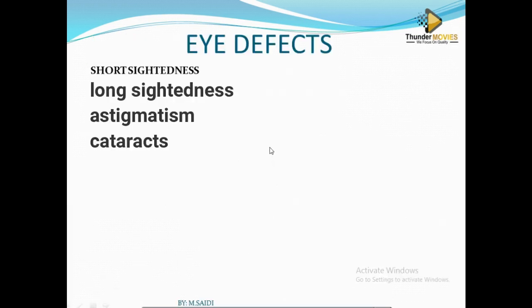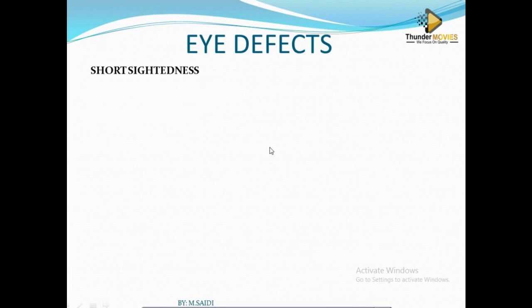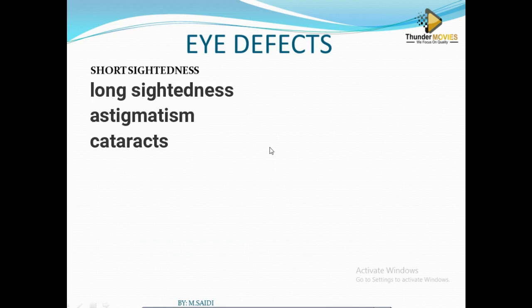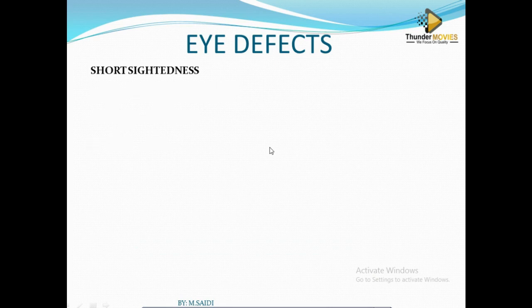Now let's look at eye defects. There are four different kinds of eye defects which we need to know. The first one is short-sightedness, then long-sightedness, astigmatism, and cataracts. Those are the four kinds of eye defects.